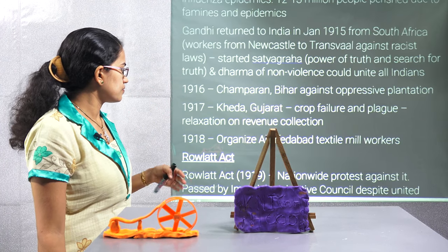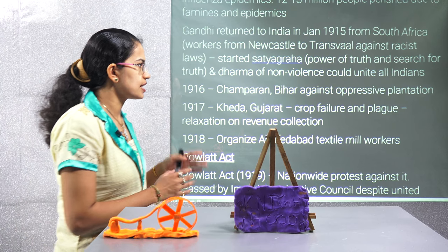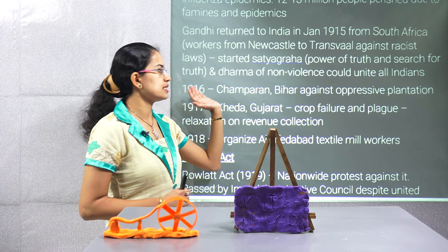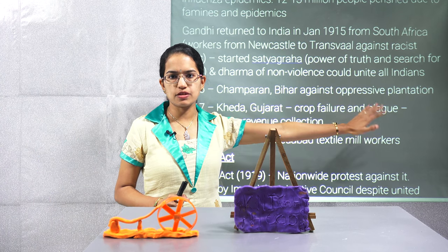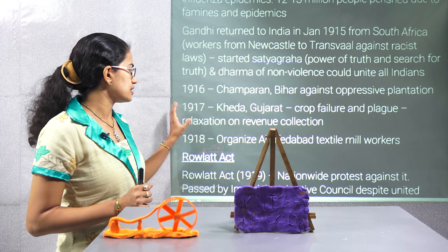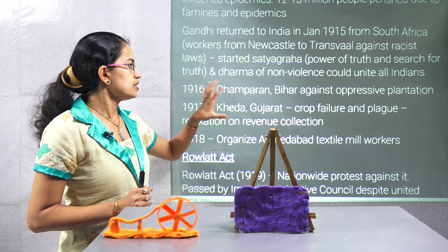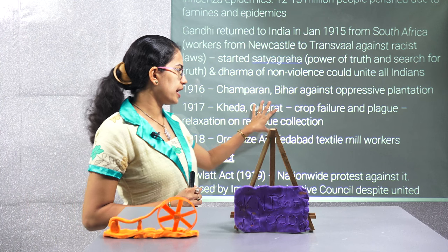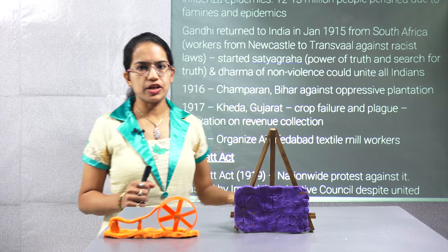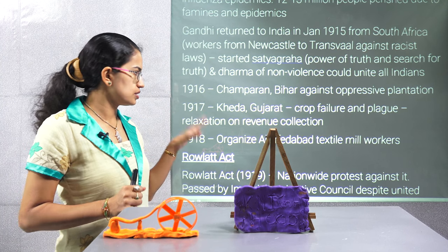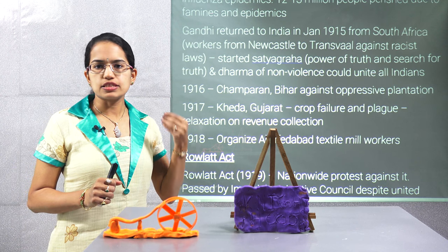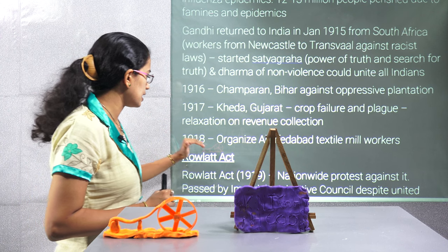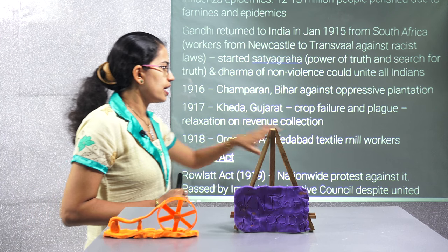Pursuing that, there were three major things that happened. In 1916, it was the Champaran movement, which was against the oppressive plantations prevalent in that region. In 1917, the protest was in Kheda in Gujarat — after crop failure and plague, people demanded relaxation on revenue collection. Finally, in 1918, the Ahmedabad textile mill workers were organised.